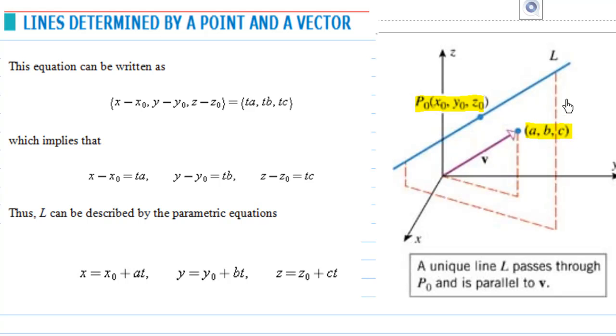The parametric equation of a line is given by x = x₀ + at, y = y₀ + bt, z = z₀ + ct, where (a,b,c) is the vector v determining the direction of the line, and (x₀, y₀, z₀) is a fixed point on the line.